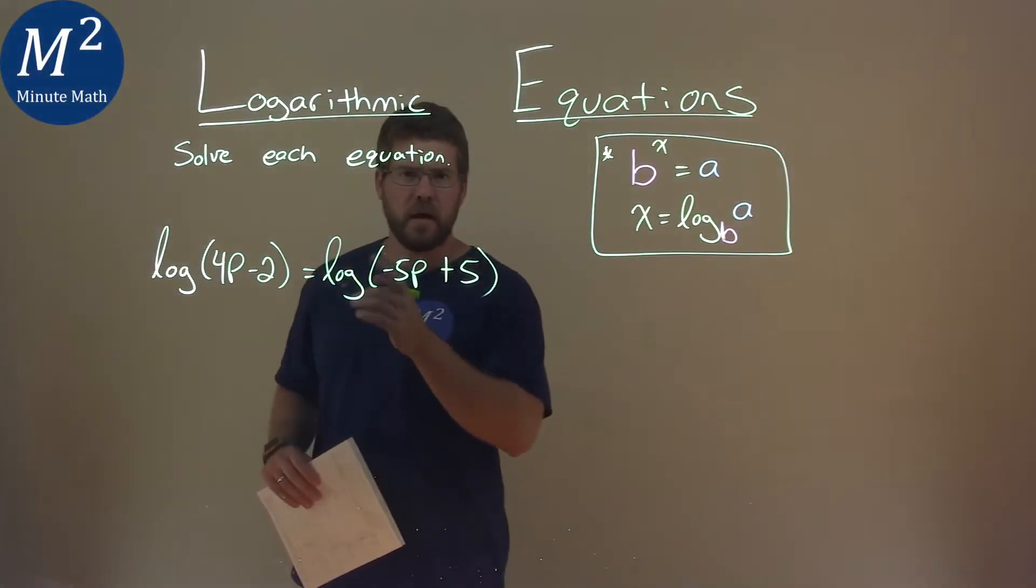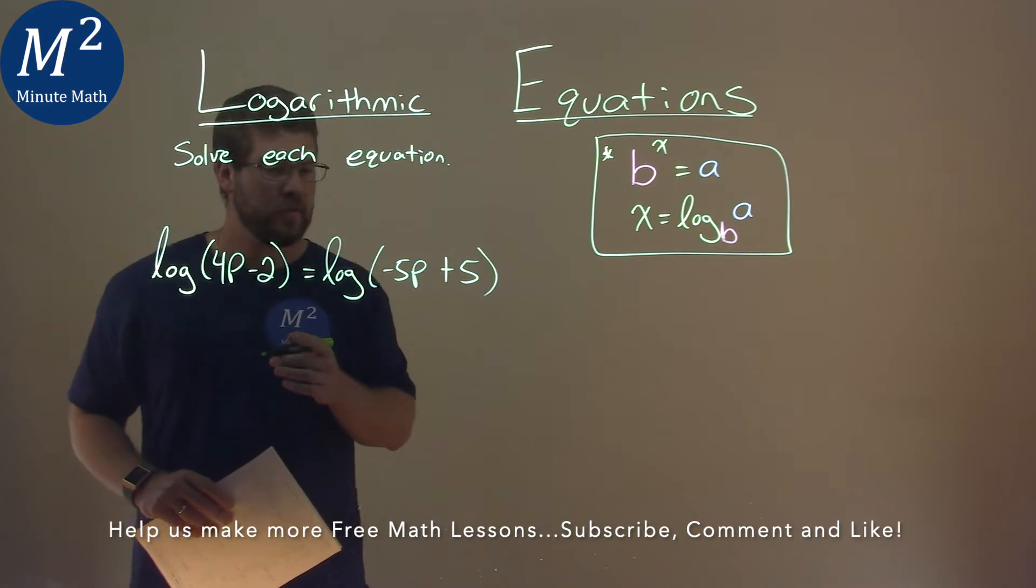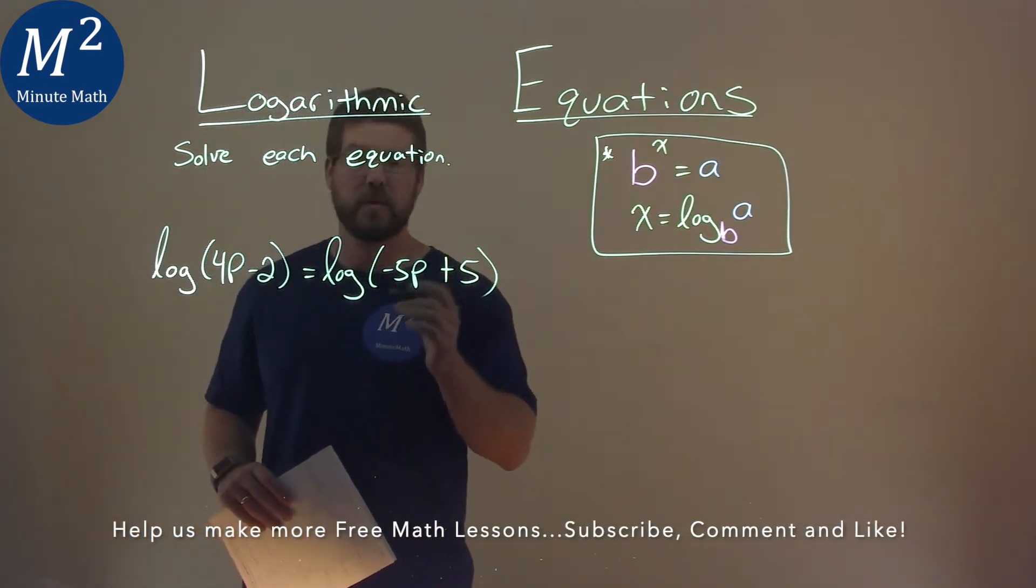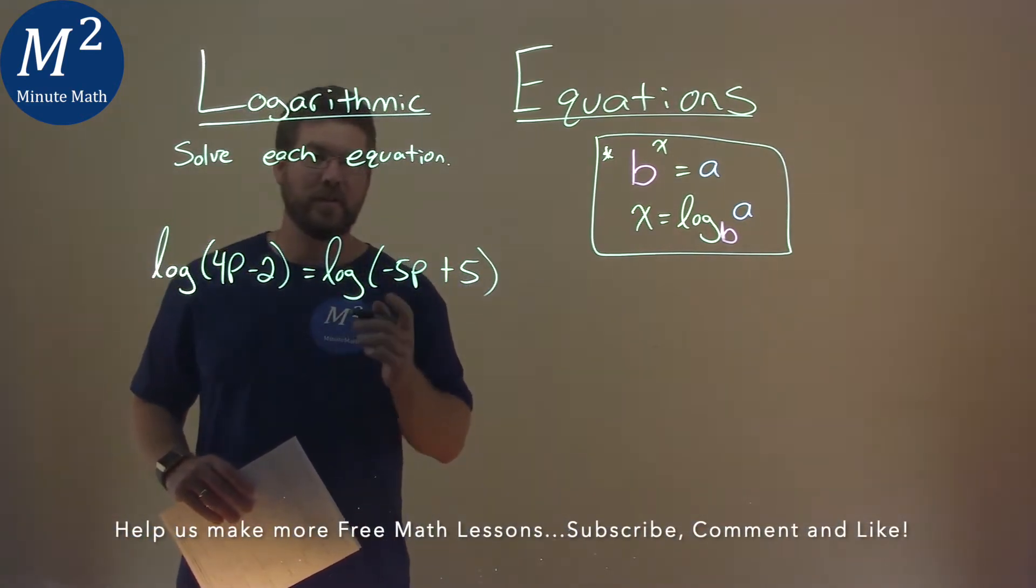We're given this problem right here. Log of 4p minus 2 is equal to log of negative 5p plus 5, and we need to solve this equation.